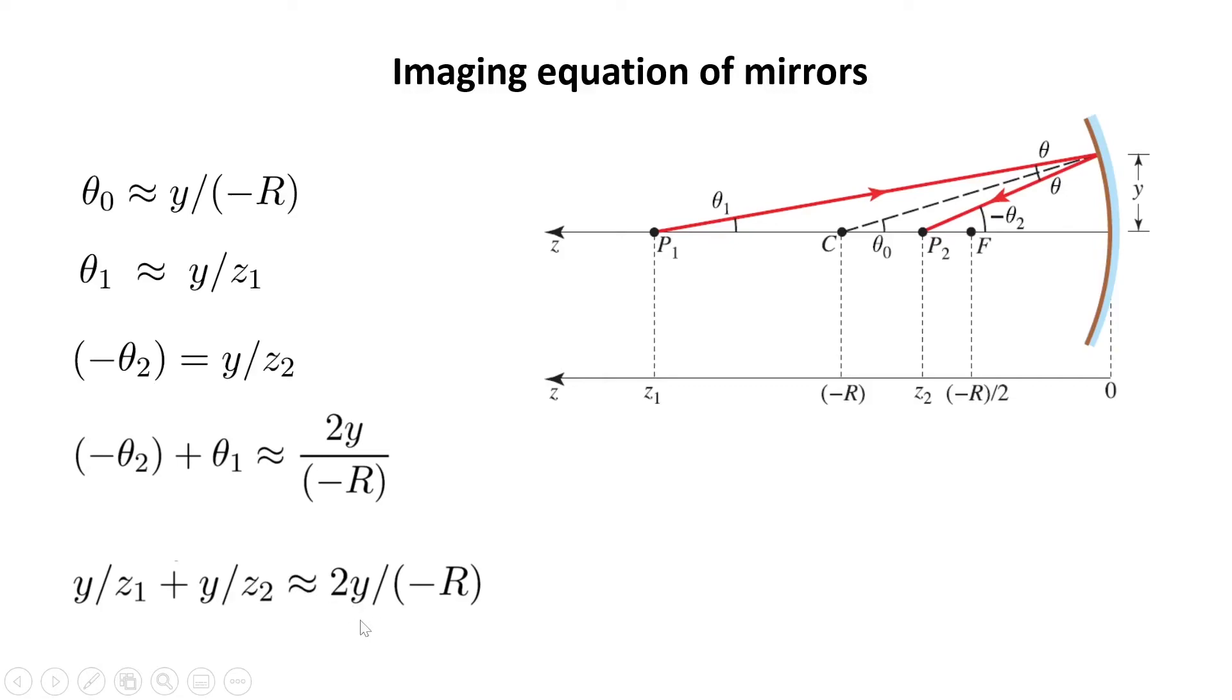So y over z1 plus y over z2 is almost 2y divided by minus R. If I simplify, I can get the equation of mirrors: 1 over z1 plus 1 over z2 is almost 2 over minus R.